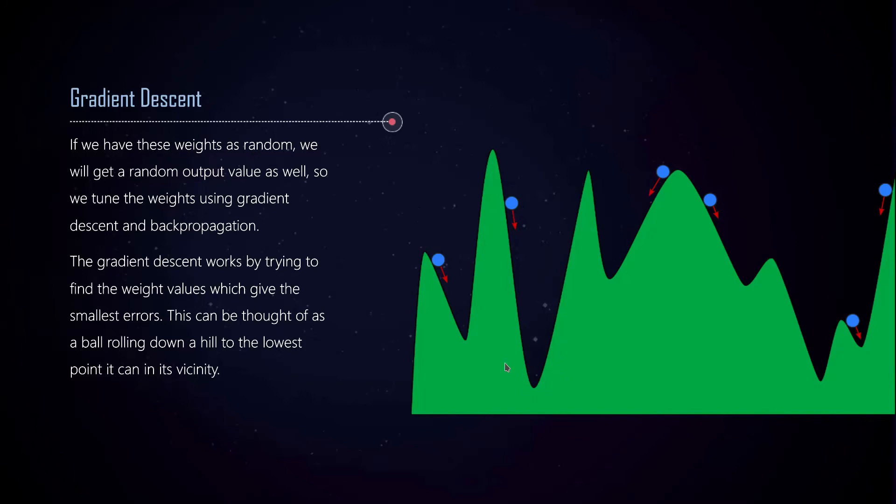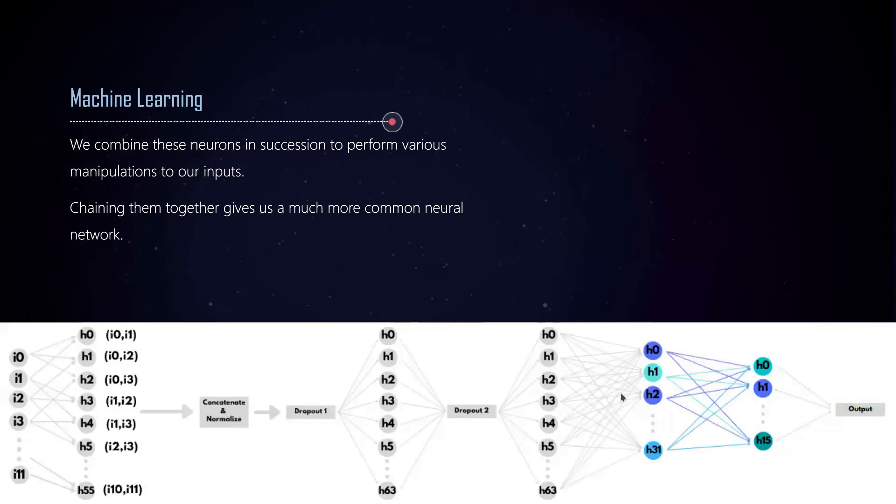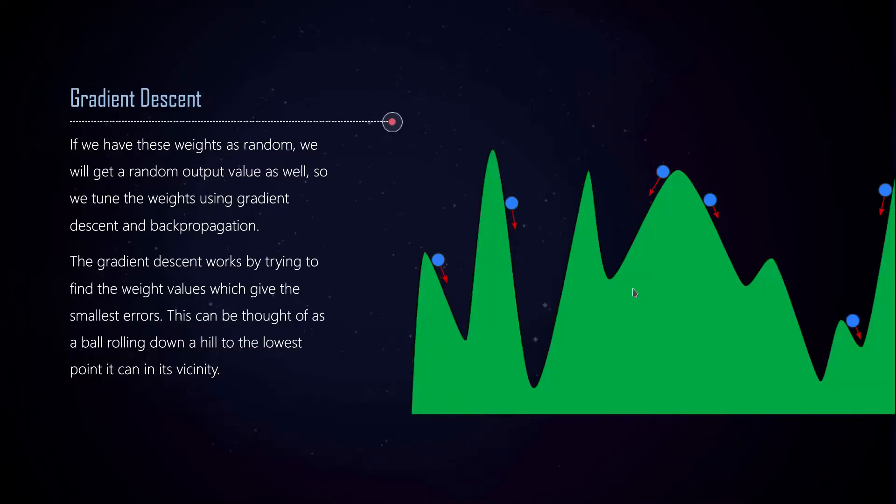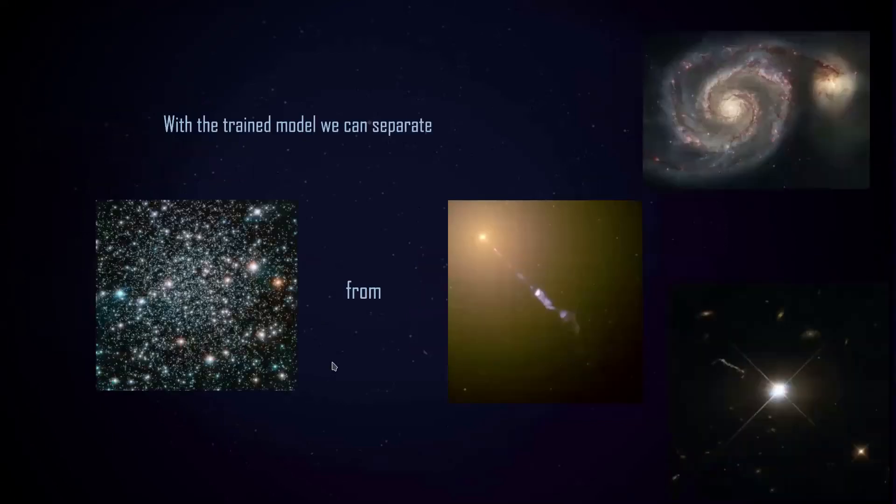But we can't always see the location of the lowest point for all the weight values, because the network I showed earlier would have 10,000 of these different balls rolling down at the same time. That's why this process is not like you solve the equation to find the exact values. We have to do some trial and error. When we find the best model possible through this trial and error process, we get a functional neural network which we are able to use to classify stars from the active galactic nuclei, galaxies, and different quasars.